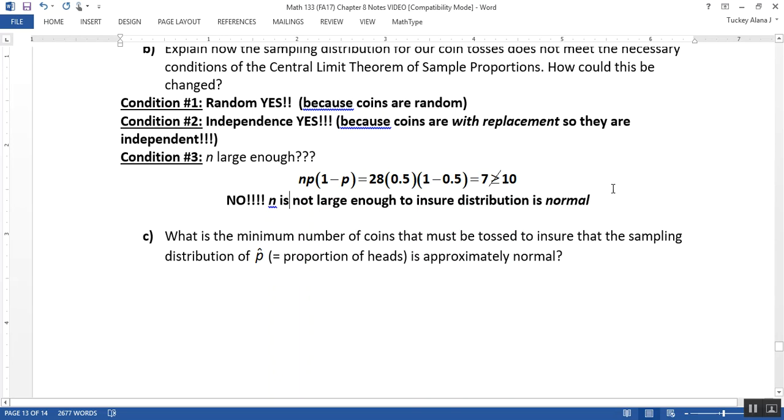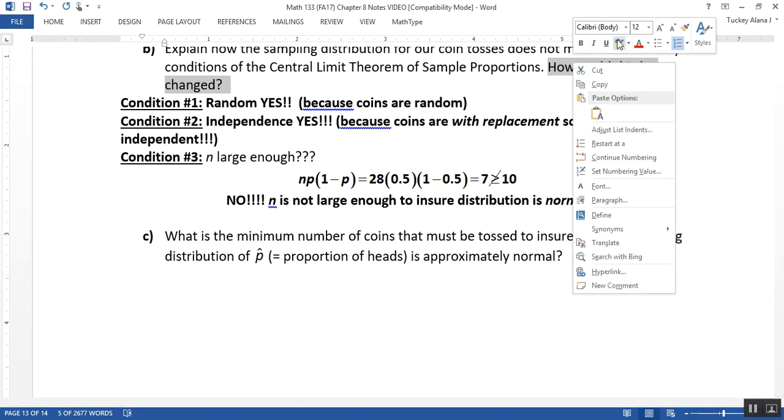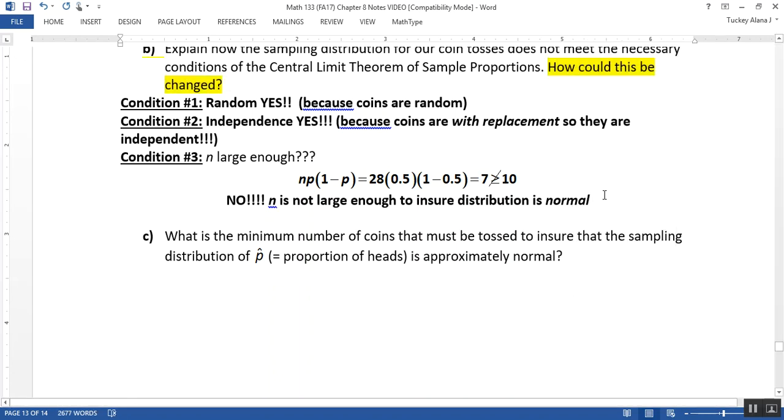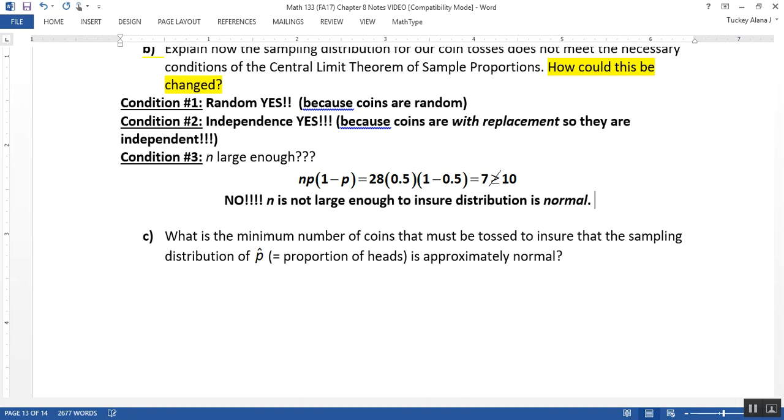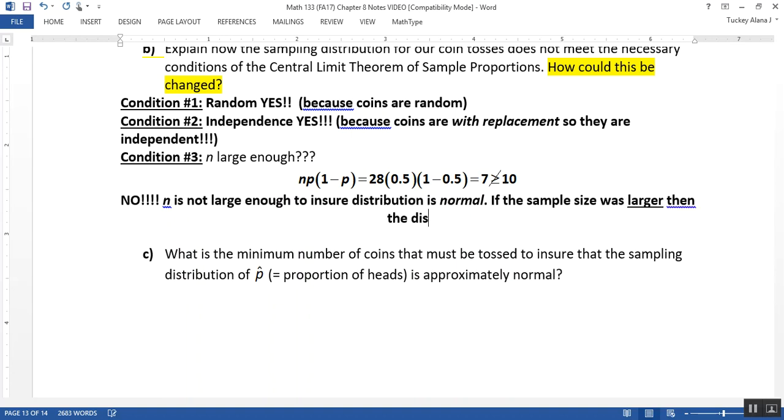Alright, so then a reasonable question might be, oh, how could this be changed? There's another question right there. So how could we make it better? Well, just have everybody toss twice, right? If we all did more samples, if we all did more, if the sample size was larger, then this would be normal. Then the distribution would be normal.